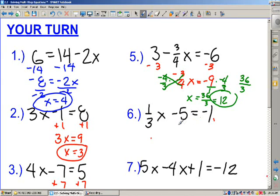Number 6: 1 third x minus 5 equals negative 1. I'm going to add 5 to both sides. 1 third of what number is 4? I multiply both sides by 3, the reciprocal of 1 third. x equals 12.